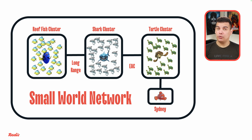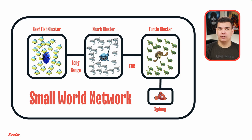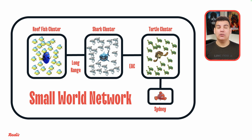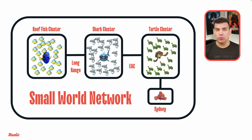The magic happens through a small world network. Dory knows both the red fish and sharks. The shark Bruce knows about the EAC, the East Australian Current. And in the EAC, the turtle Crush knows the way to Sydney. These long-range connections transform an impossible search into a navigable journey.